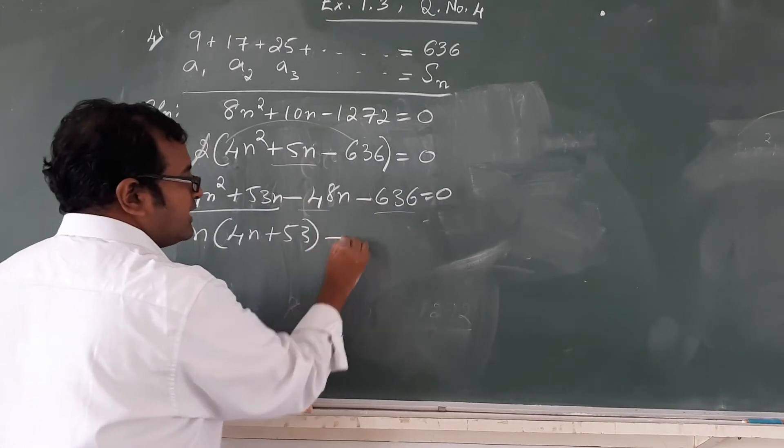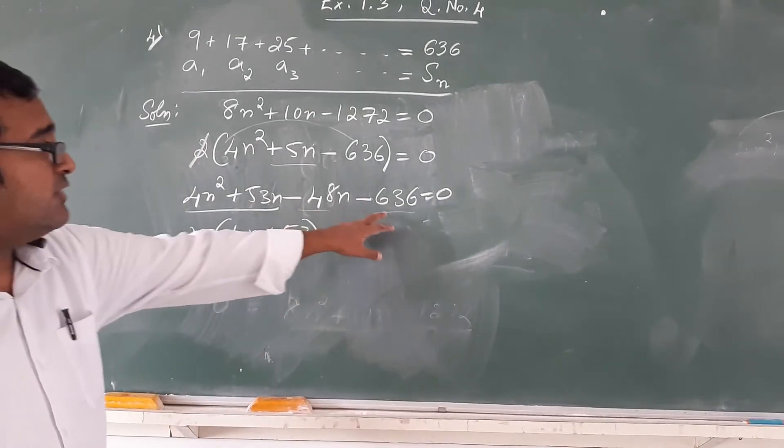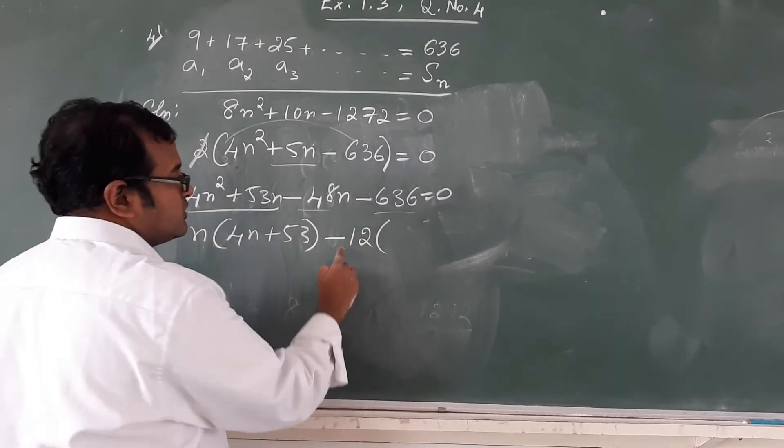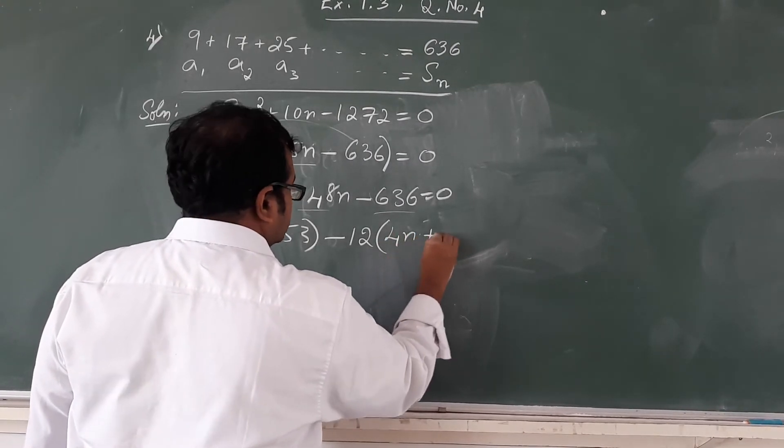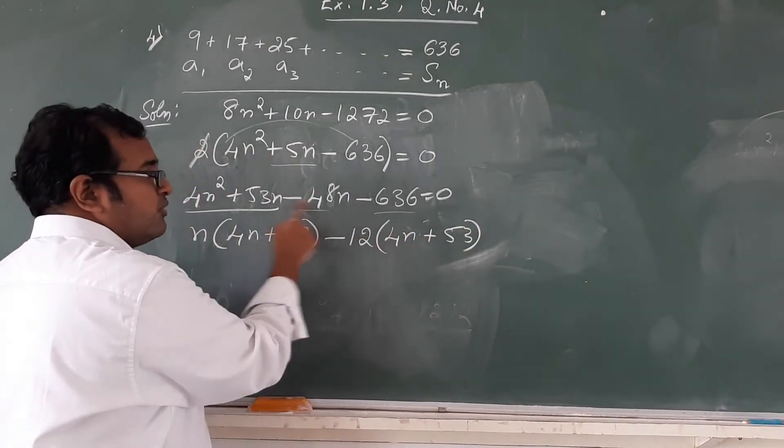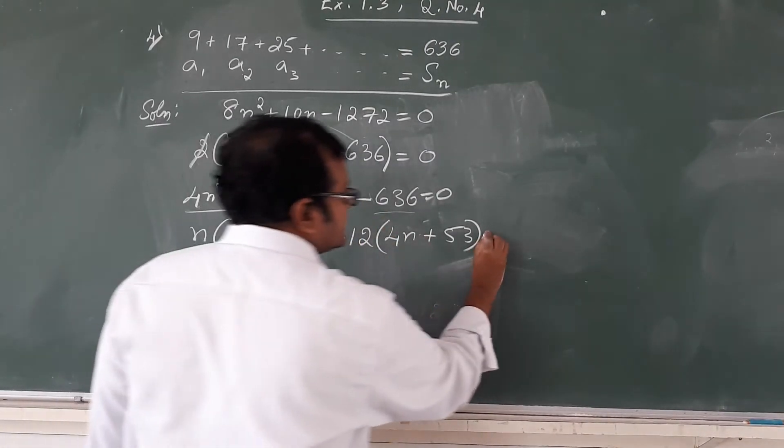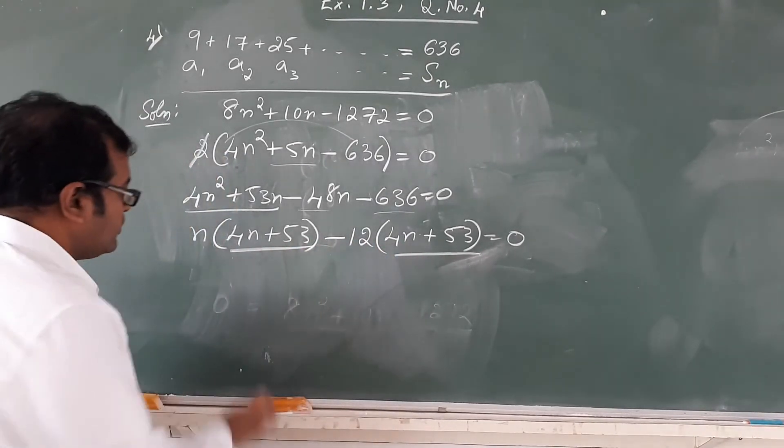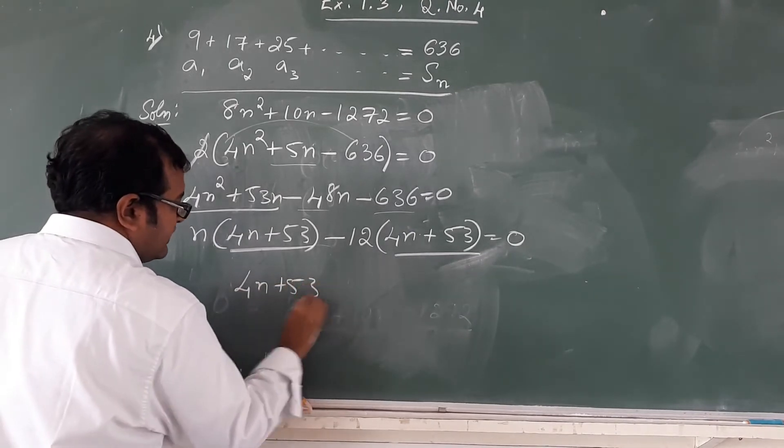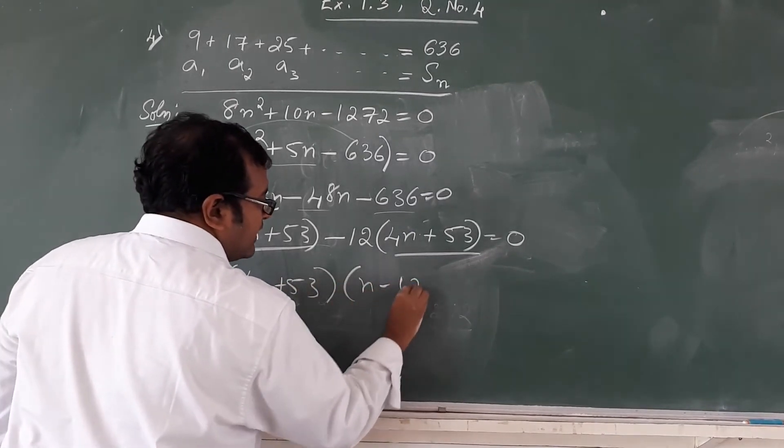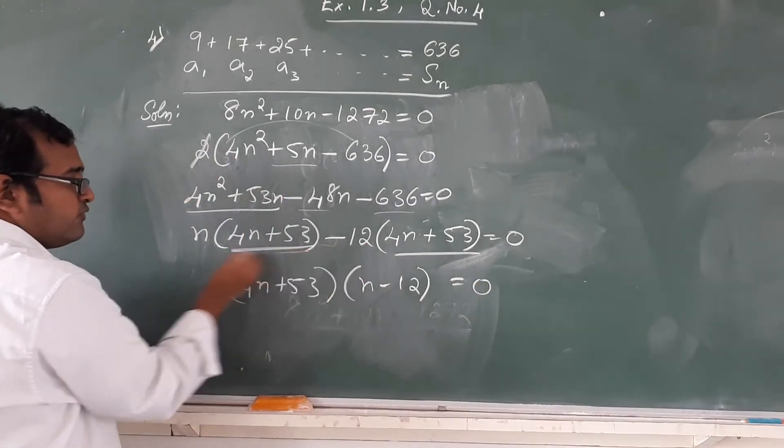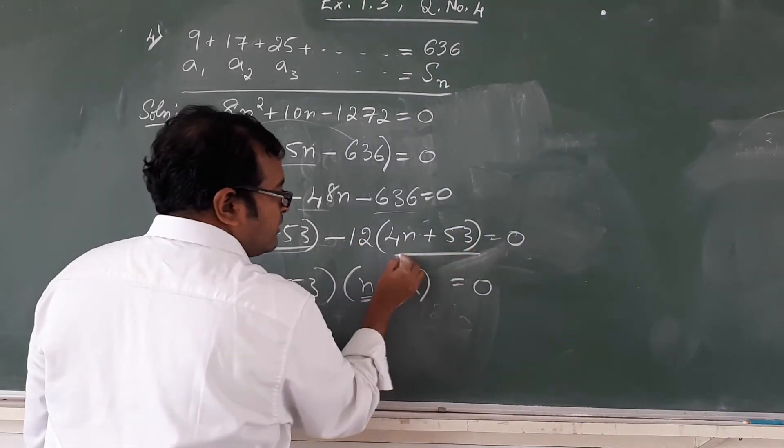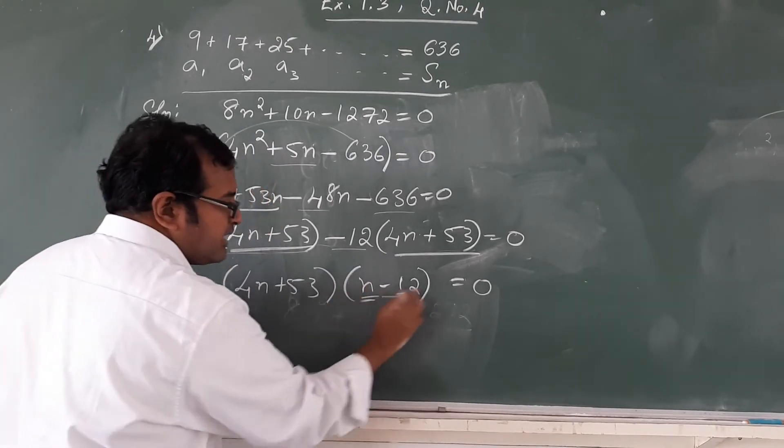Similarly with these two, since minus is common I can take out minus common outside, and here if you observe, you will get 12 common outside. 12 is a common factor in both. So 12 goes outside, automatically we get 4n plus 53. We get 4n plus 53, since minus is taken out from both, we do not get any negatives inside. This equals 0. Now we see that 4n plus 53 is a common factor in both the terms, we take that out. So we get 4n plus 53 times n minus 12 equals 0.